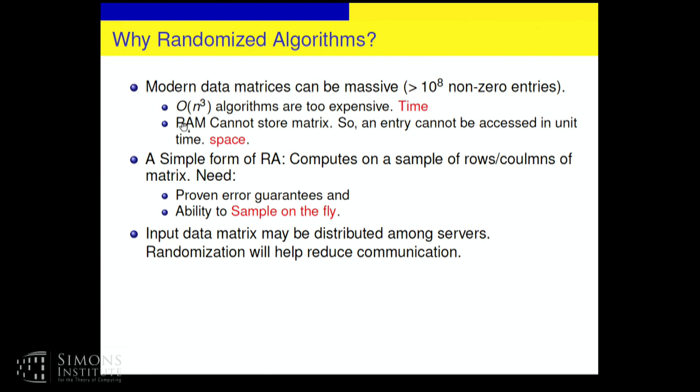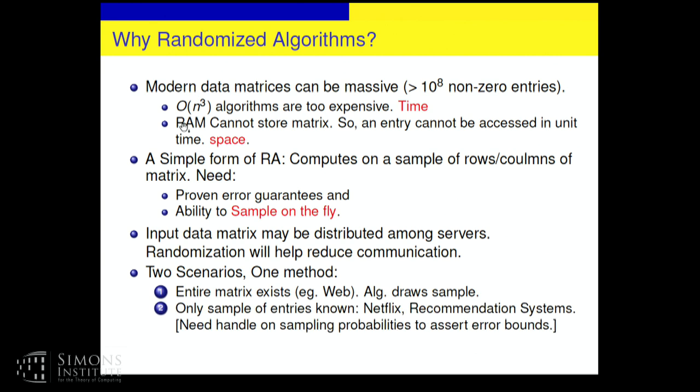Now, later in the end, maybe we'll deal with this thing. I may not get to it. The input matrix may be distributed among servers. Randomization will also help reduce communication, because it's an extra worry that we can think about. There are two scenarios, again, quite familiar, but the method is the same. The first scenario, like the web, or more generally in theoretical computer science, one assumes the matrix or the graph exists somewhere, and we are drawing samples from it. But conceptually different is something like recommender systems, which you're all familiar with, where you don't have the whole matrix anywhere. You only have some entries. But then you can pretend that the matrix was got by sampling from a whole matrix. For that, you have to know something about the sampling probabilities, which were implicitly used in drawing these samples, to prove things.